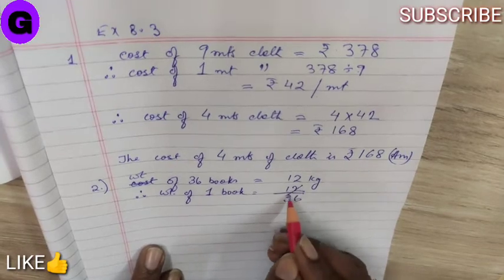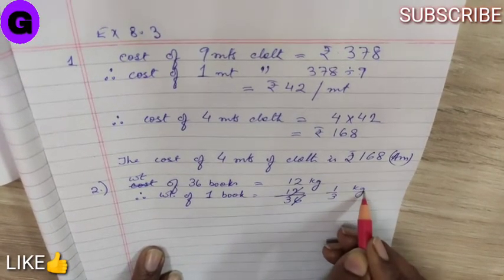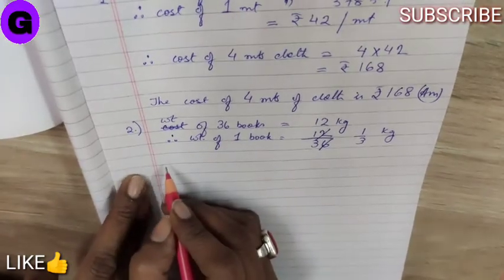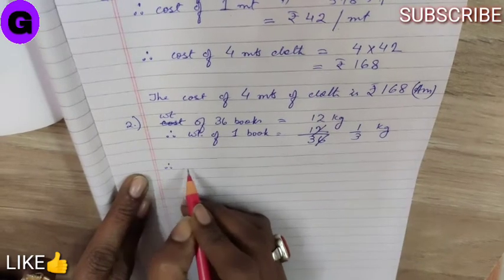So, 12 divided by 36. That will come down to 1 by 3 kg. Now, we will find the value of the weight of 75 such books. Therefore,